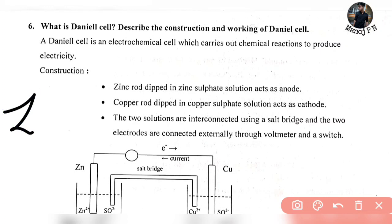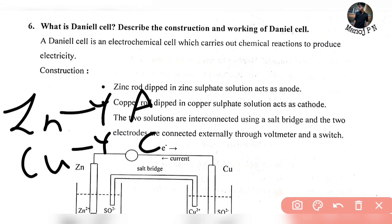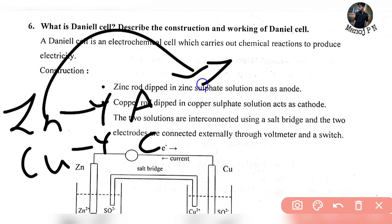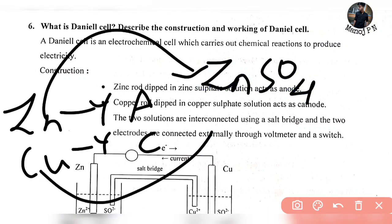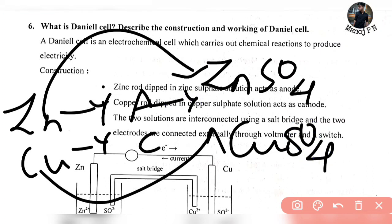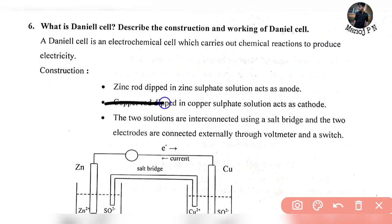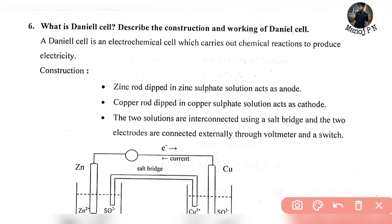For construction: a Zn rod is dipped in ZnSO4 solution, which acts as the anode (oxidation). A copper rod is dipped in CuSO4 solution, which acts as the cathode (reduction). The two solutions are interconnected using a salt bridge, and the two electrodes are connected externally via a voltmeter and a switch.